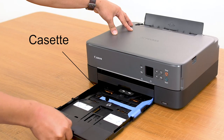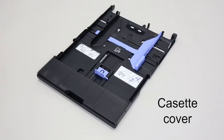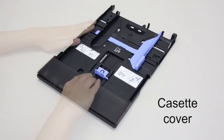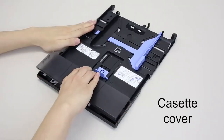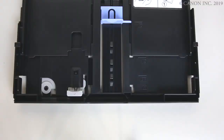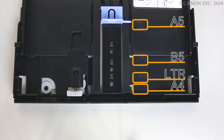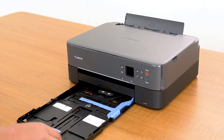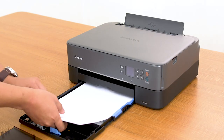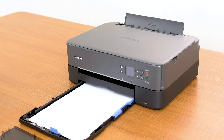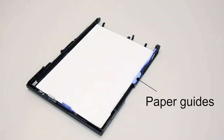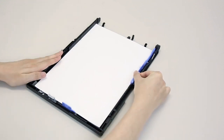Cassette and cassette cover — detach to load paper in the cassette. Load A4, B5, A5 or letter size plain paper into the cassette and insert it into the printer. Paper guides — align with right, left, and front sides of the paper stack.